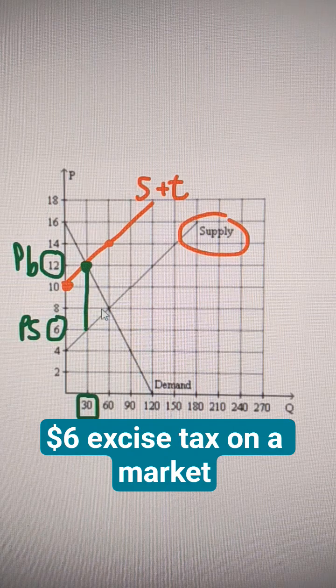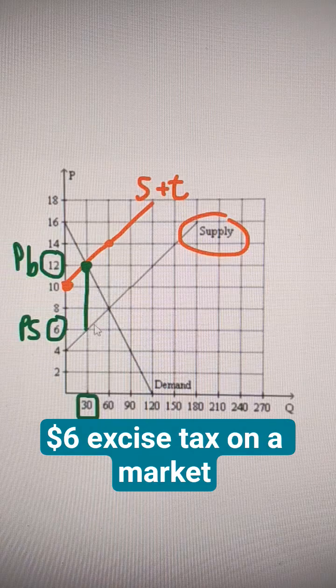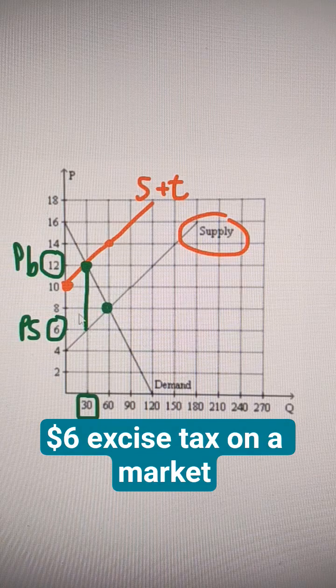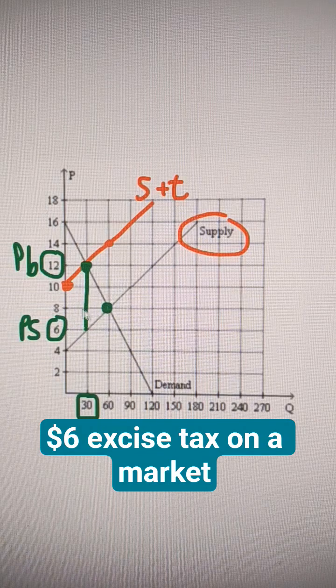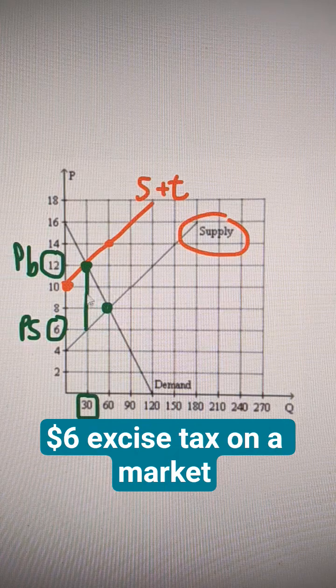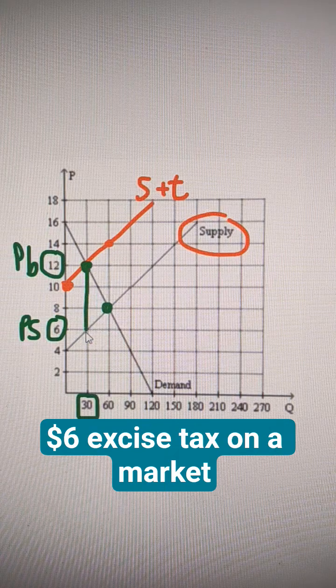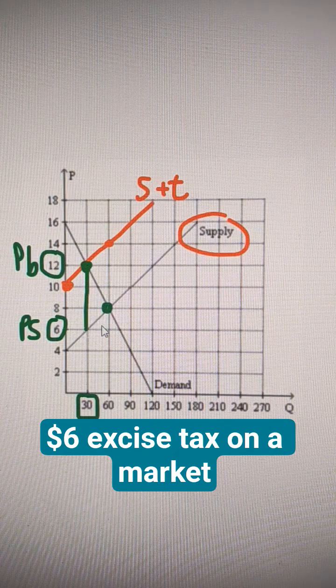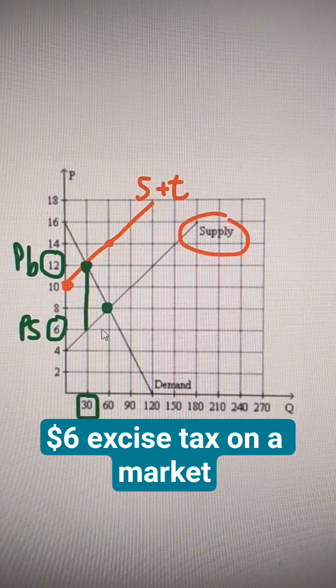And then the tax is shared between the, of that $6, what we're doing is we're comparing that to the original equilibrium price. So the price was $8. The buyers will pay $4 of that tax. The sellers will pay $2 of that tax. So this tax burdens the buyers more than the sellers.